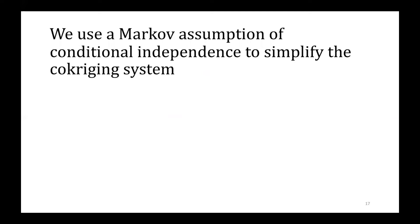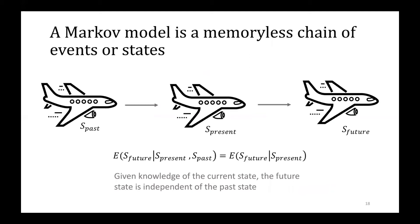We use a Markov assumption of conditional independence to simplify the co-kriging system. In probability theory, a Markov model is a stochastic model used to model randomly changing systems where it is assumed that future states depend only on the current state, not on the events that occurred before it. For example, if we have information about the current position and trajectory of a drone, then we can assume that the prediction of the future state is conditionally independent of the past state. Markov models are really common in the artificial intelligence community because they make complex decision-making problems much more tractable.